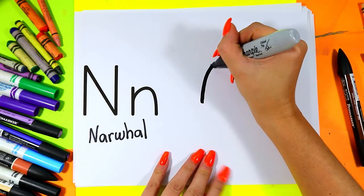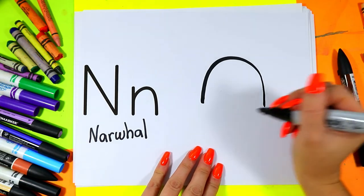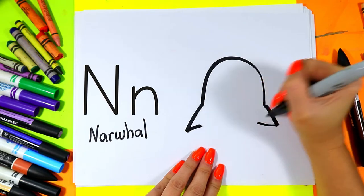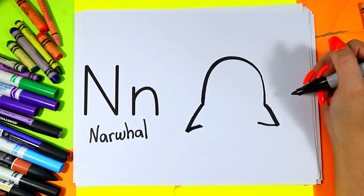We're going to draw a nice big curving line for narwhal's head. One line out on one side and one out on the other like two letter V's for narwhal's fins.